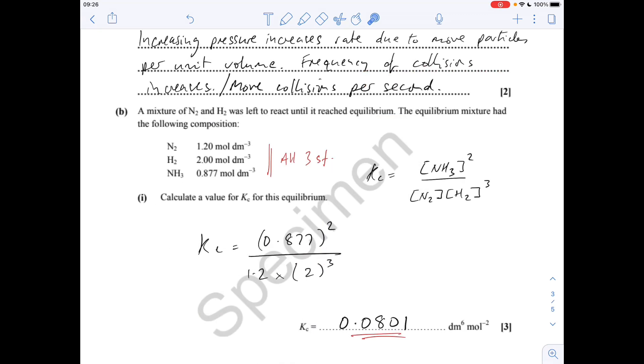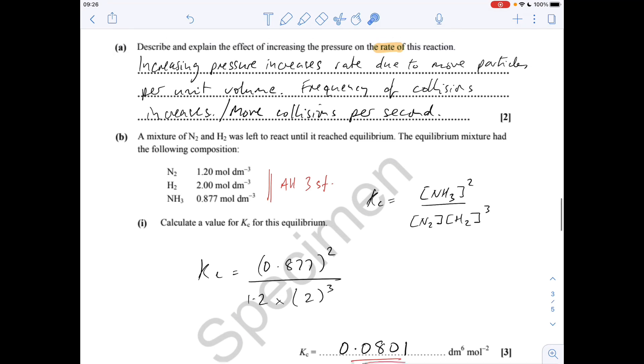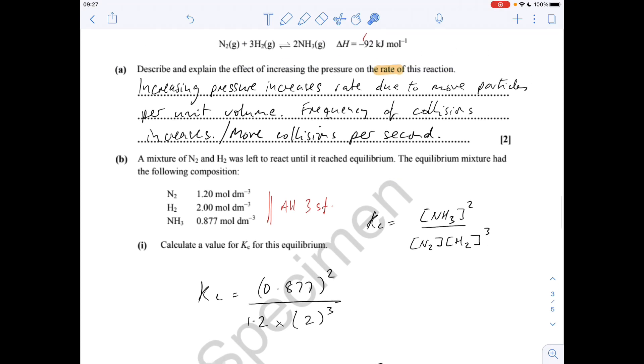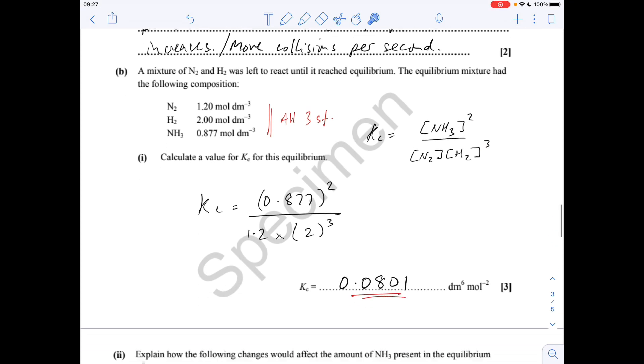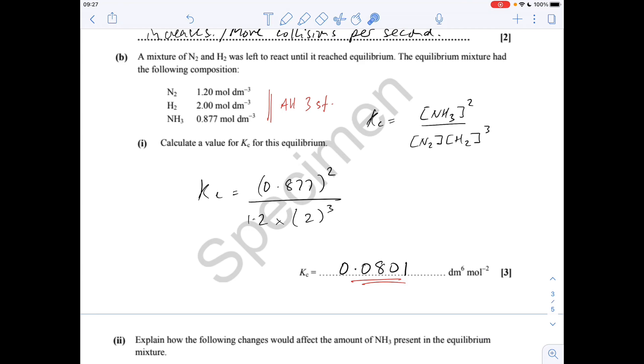Part B now. We've got to calculate Kc for the equilibrium. We're given all the equilibrium concentrations. Notice they're all to three significant figures, so my final answer is to three significant figures. To work out Kc, we need the expression. It's the product's equilibrium concentration over the reactants, and remember the balancing numbers become powers, so that's cubed. Putting your numbers in, we get 0.0801.